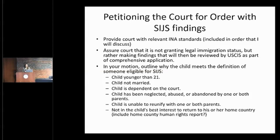In your motion, you're outlining why the child needs to meet the definition of someone eligible for Special Immigrant Juvenile Status. Again: younger than 21, not married, dependent on the court — even if dependent on the court means the court has placed the child with the non-abusive parent. The child has been neglected, abused, or abandoned. The child is unable to reunify with one or both parents and it's not in the child's best interest to return to their home country.